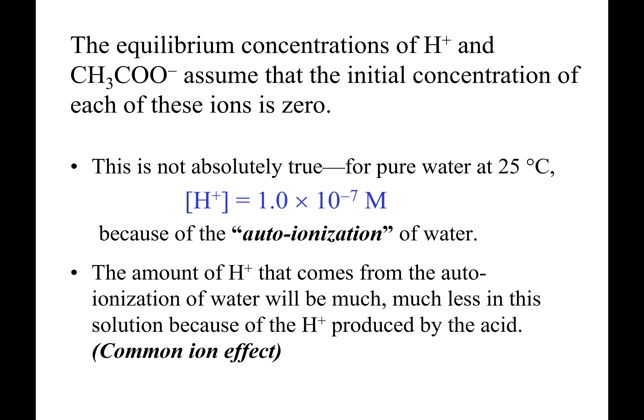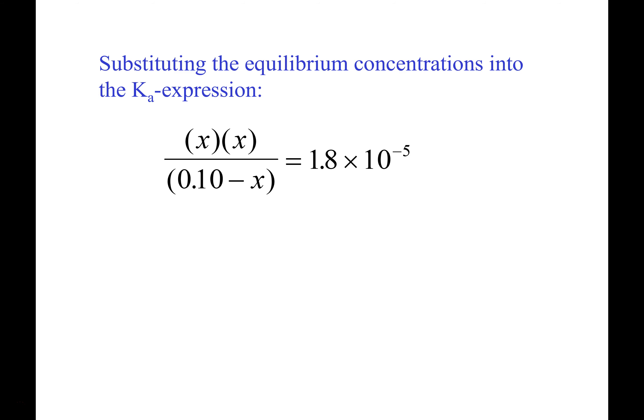The hydrogen ion already present from the auto-ionization of water is negligible. So our Ka expression is X times X in the numerator, and (0.10 minus X) in the denominator, all equal to the Ka of 1.8×10⁻⁵. We need to solve for X — that would normally involve using a quadratic. But if we assume the amount of acid that ionizes is relatively small, we can apply a simplifying assumption.